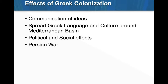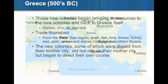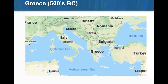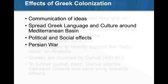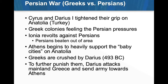There was spreading of the Greek language and culture around the Mediterranean Sea basin, as well as political and social effects. Now we're going to talk about the Persian War, which was an effect of Greek colonization because the Greeks began to settle on Anatolia, which is modern-day Turkey. But they didn't own Anatolia — they were settling there, but the Persians owned Anatolia.